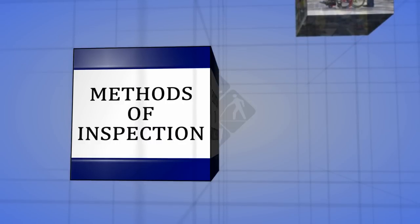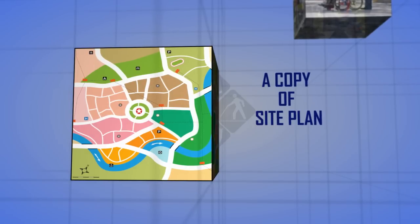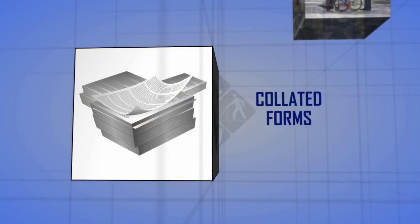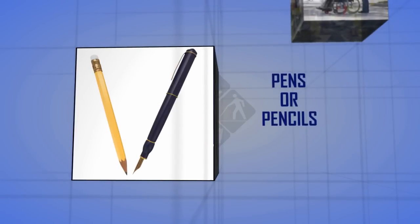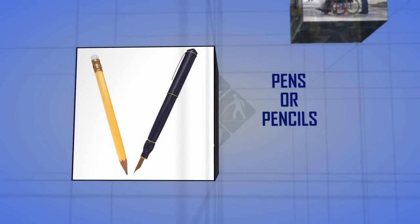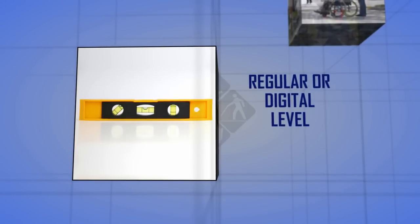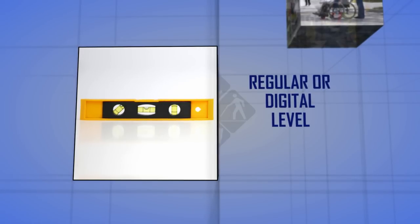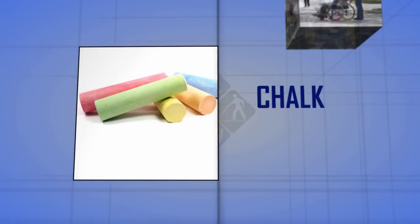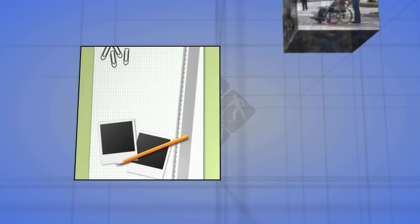To identify barriers at each site, at a minimum, take the following items with you to conduct your site reviews: a copy of the site plan showing where public programs are located; collated forms for each building; measurement guides; clipboards; pens or pencils (writing must photocopy clearly); measuring tape; a regular or digital smart level for measuring the degree of slope on ramps and other slope surfaces — a hand level is especially useful for long exterior slopes; chalk for measuring distances on surfaces; a camera; and graph paper.